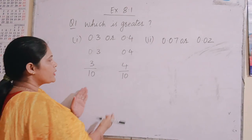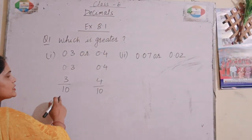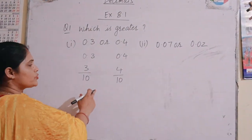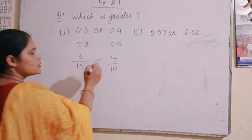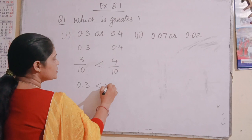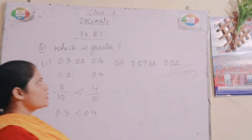Now it is easy to compare which one is greater and which one is lesser. So here we can see 3 is lesser than 4 or 4 is greater than 3. So this one is greater. 0.3 is lesser than 0.4. Just let us do the next one.